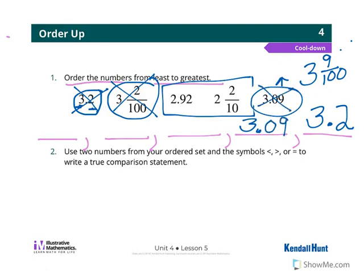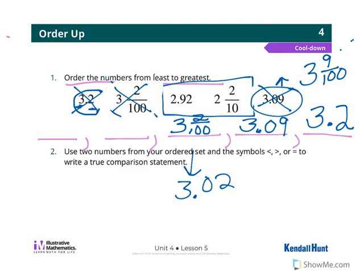So 3 and 2 hundredths has to be smaller. Oh wait, 3.09 is the next smallest—so I'm going to cross that one off. And then I'm going to erase this one. Oh, but that's the only one with the 3 that is left, so 3 and 2 hundredths would have to be your next smallest.